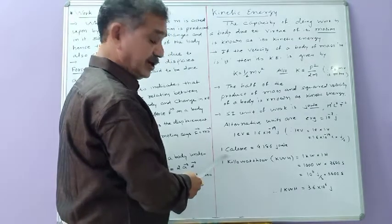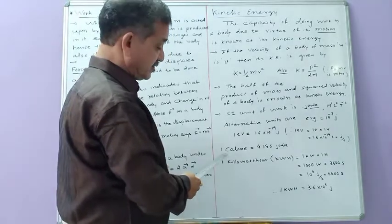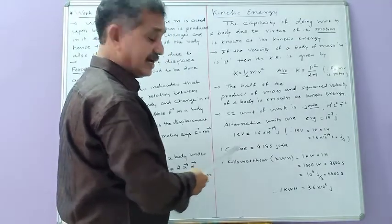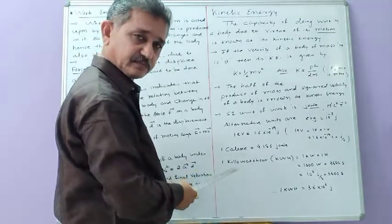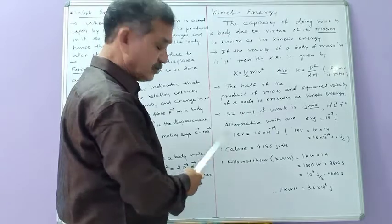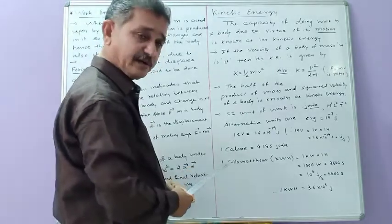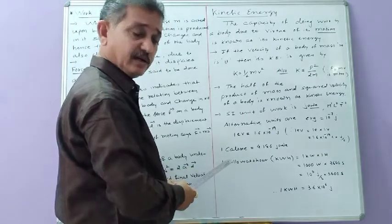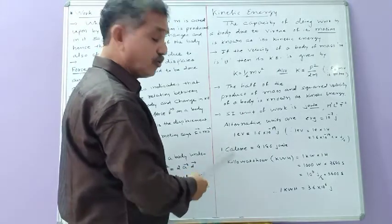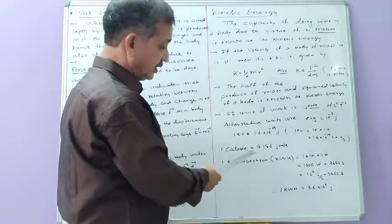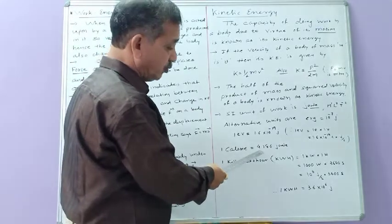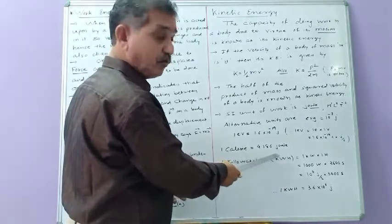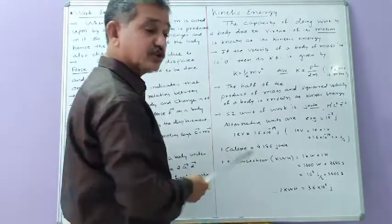Another unit of energy is calorie. It is actually a unit of heat energy. 1 calorie is equal to 4.186 joule.